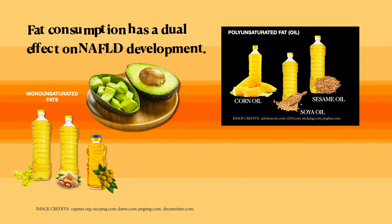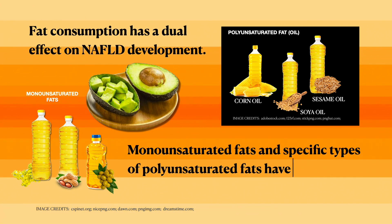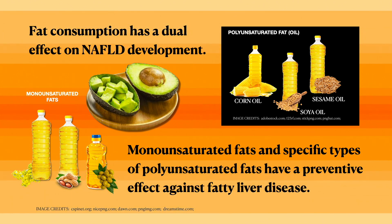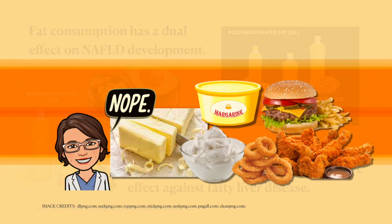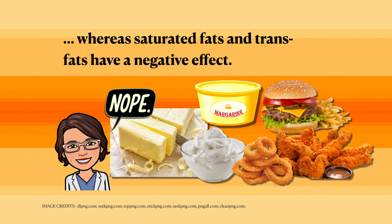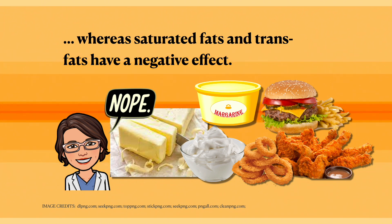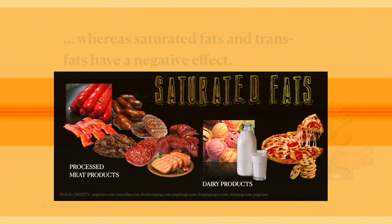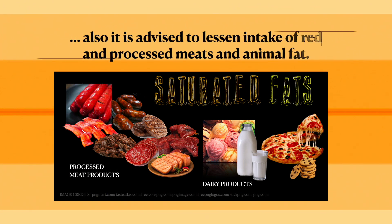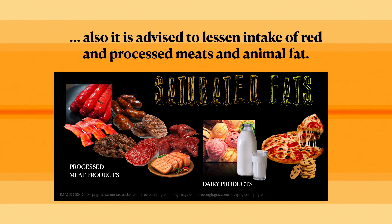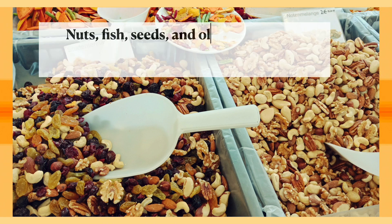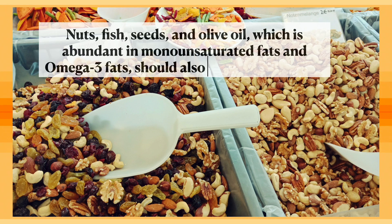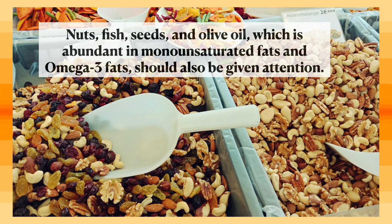Fat consumption has a dual effect on NAFLD development. Monounsaturated fats and specific types of polyunsaturated fats have a preventive effect against fatty liver disease, whereas saturated fats and trans fats have a negative effect. It is advised to lessen intake of red and processed meats and animal fat. Nuts, fish, seeds, and olive oil — which are abundant in monounsaturated fats and omega-3 fats — should be included in food choices.